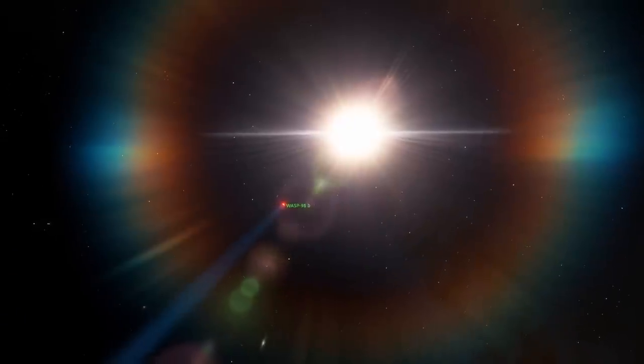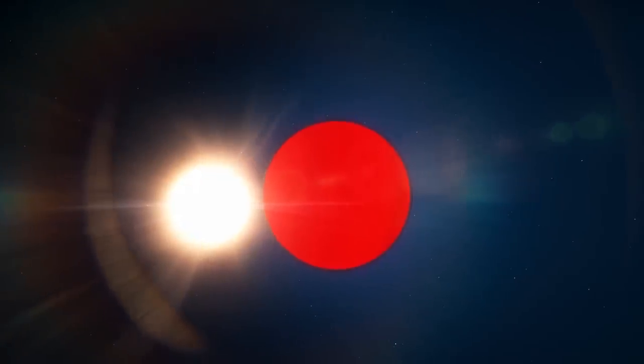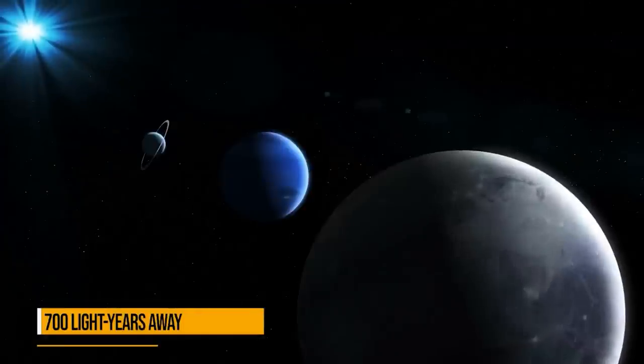For the first time, exoplanet WASP-39b's atmosphere included carbon dioxide. WASP-39b lies in Virgo, 700 light-years from Earth.